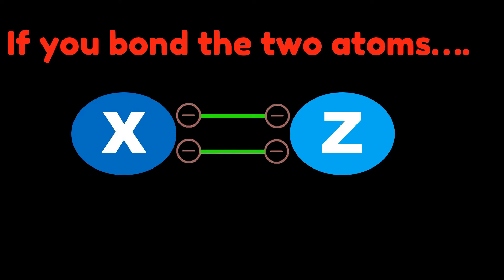Now, let's see their electronegativity. Which atom will attract more electrons? Yes, it's correct. It's the Z-atom. But what would it look like?